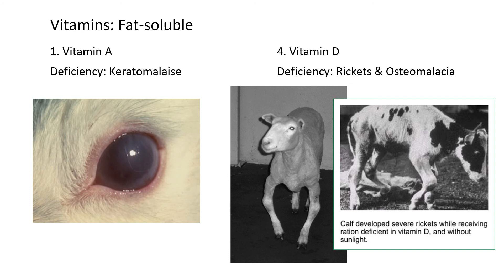Now moving on to fat-soluble vitamins — A, D, E, and K. Deficiency of vitamin A causes keratomalacia, which usually affects the eyes. The cornea doesn't form correctly because keratin, which sounds like kera, is supposed to be in the eye. You can see the eye is very pink around it — skin pigments are affected, the melanin that's supposed to be in the skin isn't there, and the eye is affected. This doesn't necessarily mean the animal is blind, but it can become blind if serious, so it's not good for the animal.